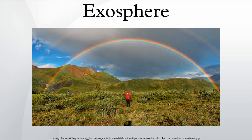The exosphere is a thin, atmosphere-like volume surrounding a planetary body where molecules are gravitationally bound to that body, but where the density is too low for them to behave as a gas by colliding with each other. In the case of bodies with substantial atmospheres, such as Earth's atmosphere, the exosphere is the uppermost layer, where the atmosphere thins out and merges with interplanetary space.